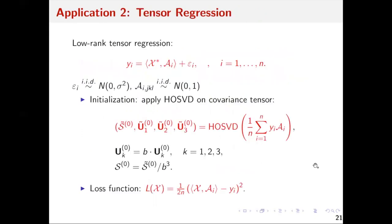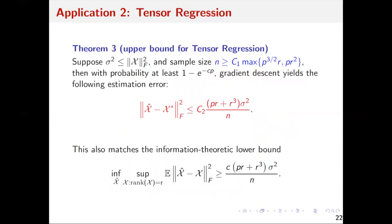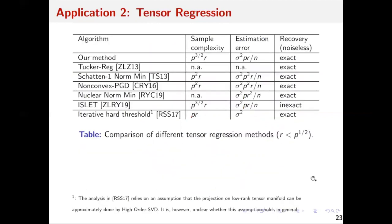In the tensor regression example, we apply HOSVD on the covariance tensor between the response Yi and the tensor covariate Ai, then apply gradient descent on the following loss function. We have a theoretical guarantee with mild conditions, and this upper bound matches the information-theoretic lower bound. In this table we briefly compare our method with ones in the previous literature. Our algorithm achieves tractable computation, theoretical guarantees, small sample complexity, low estimation error, and can achieve exact recovery when there is no noise.